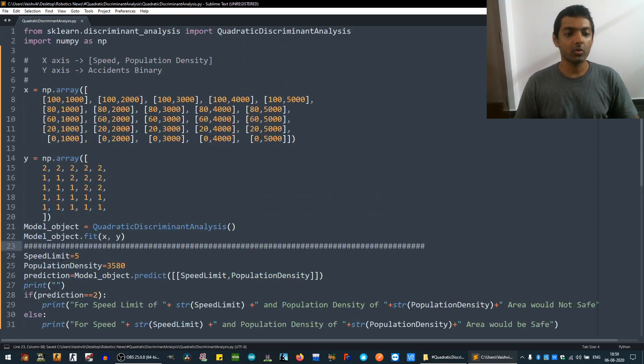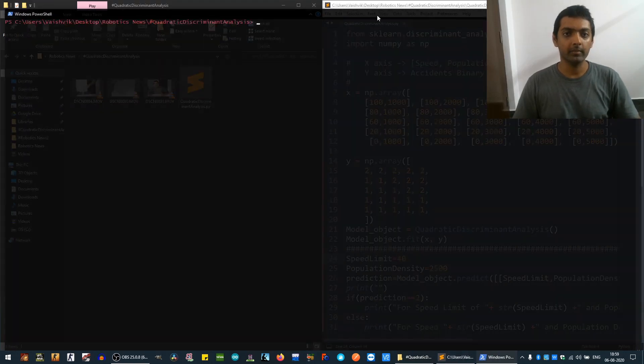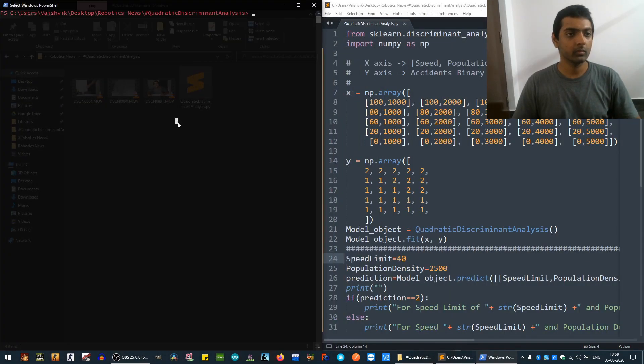After that, we start testing it. For example, we think that our population density is 2,500 in a particular area and what speed limit will be safe in that area - let's predict that. So, we have run this model.